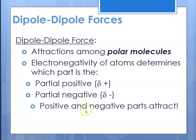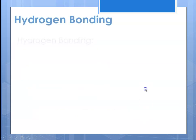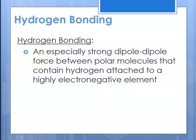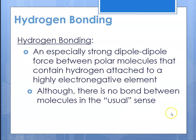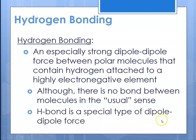These positive and negative parts of the molecule tend to attract one another. The third type is hydrogen bonding. Hydrogen bonding is an especially strong dipole-dipole force between molecules that contain hydrogen attached to another highly electronegative element. Although there is no bond between the molecules in the usual sense, it is a strong interaction. The hydrogen bond is this special type of dipole-dipole force, and it is the strongest of the dipole-dipole interactions.